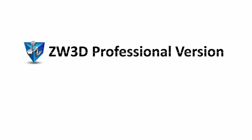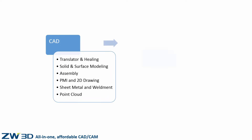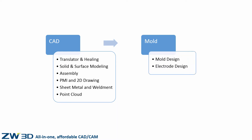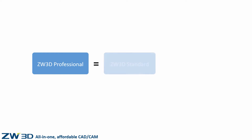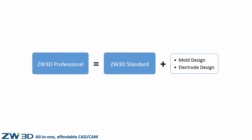ZW3D Professional Version — from product design to mold design. ZW3D Professional Version provides all CAD features and mold functions. Which means, ZW3D Professional Version adds mold design and electrode design functions on top of ZW3D Standard Version.